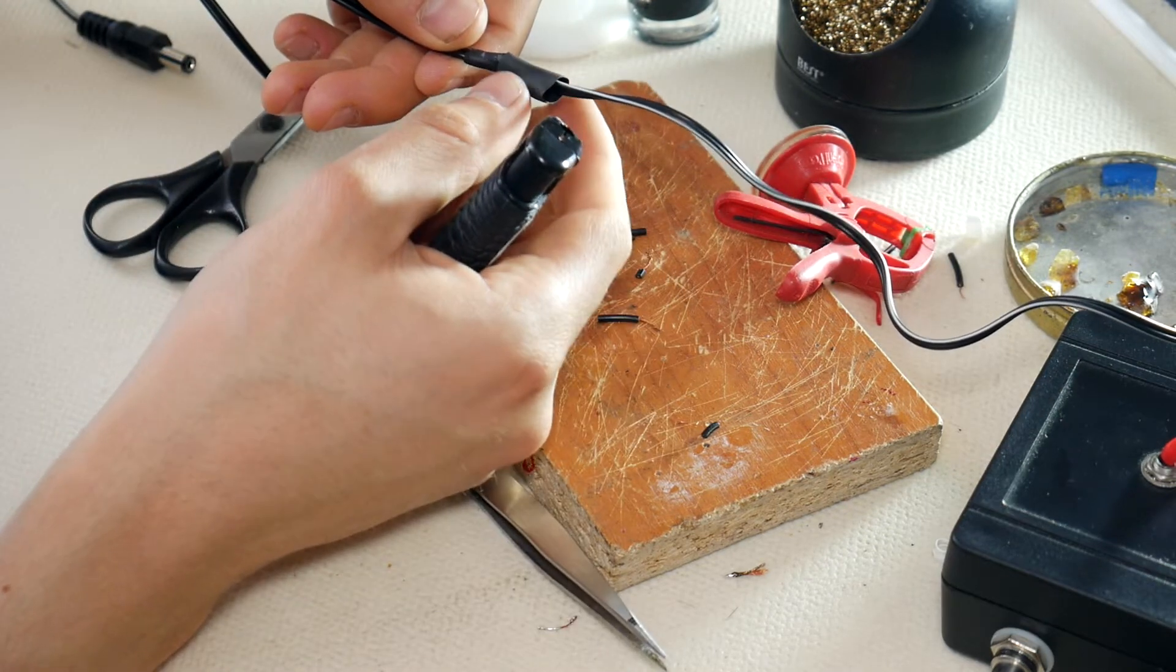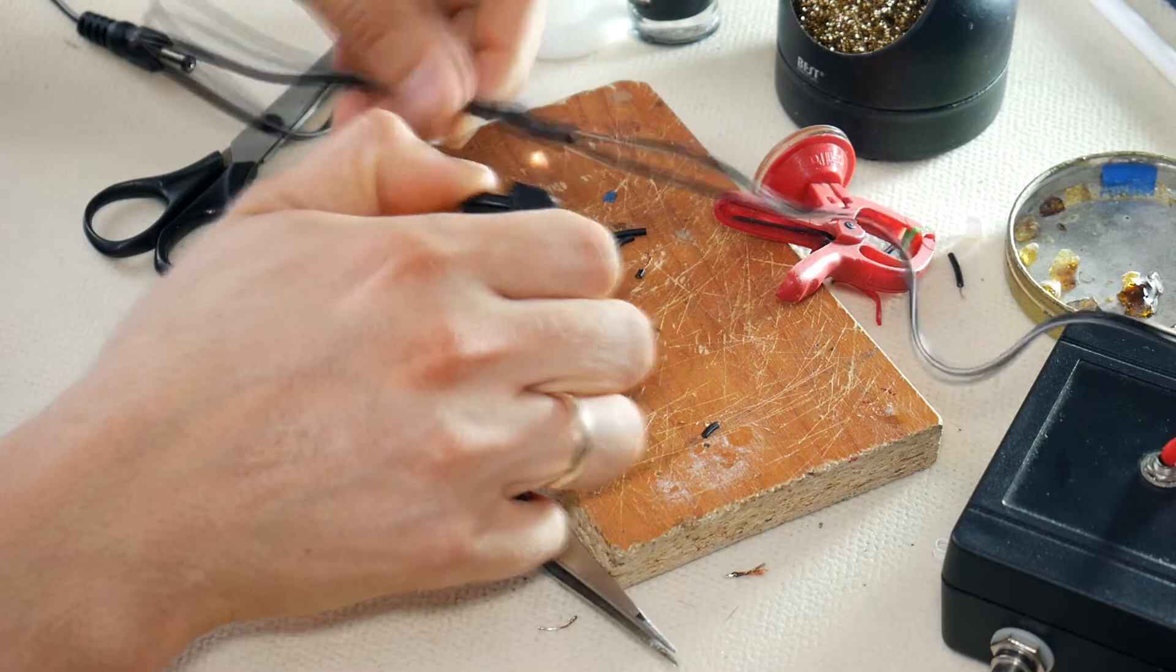Then for proper insulation, slide the second tube over the connection and shrink it. And here's the result.